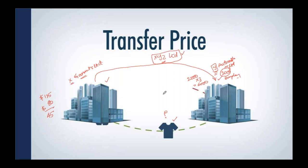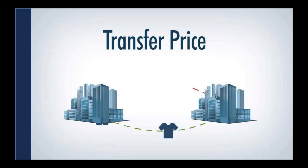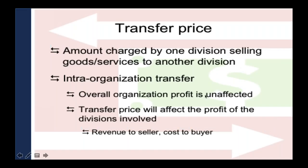When goods are internally transferred, this manager may think his company belongs to the same group so a lower price should apply — but each manager is responsible for the profitability of their own company. So what price should be implemented for the internal transfer of goods and services? You have one receiving company and one issuing company. The issuing company is the seller and the receiving company is the buyer.